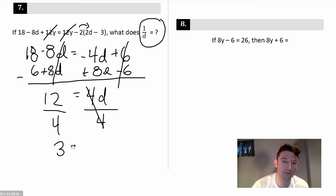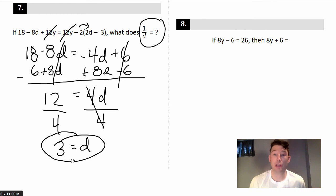And we get d = 3. But don't be one of those SAT students like 'Oh, I got it, I'm done,' and you get the question wrong because they're looking for 1/d.